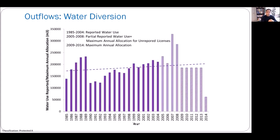There is some water diversion information available for Skeleton Lake. There are two types: water allocation and water use. From 1985 to 2004 we have actual water use data. For 2005 and 2008 we have partial data. So we used a combination of water use and maximum water allocation for unreported licenses — meaning licenses with allocation data but no reported water use. From 2009 to 2014 only water allocation data is available, so we used that as a proxy for theoretical maximum water use.